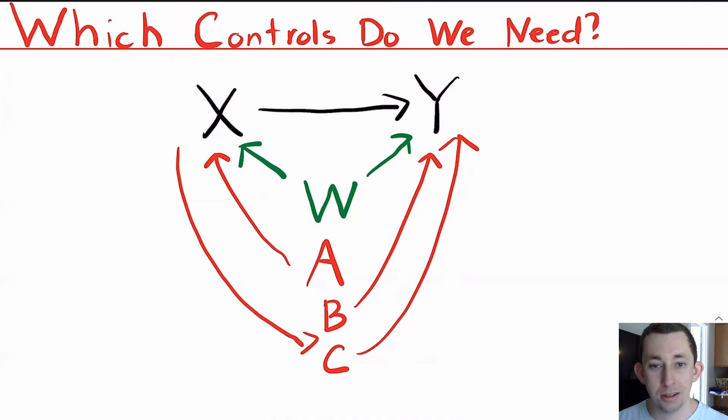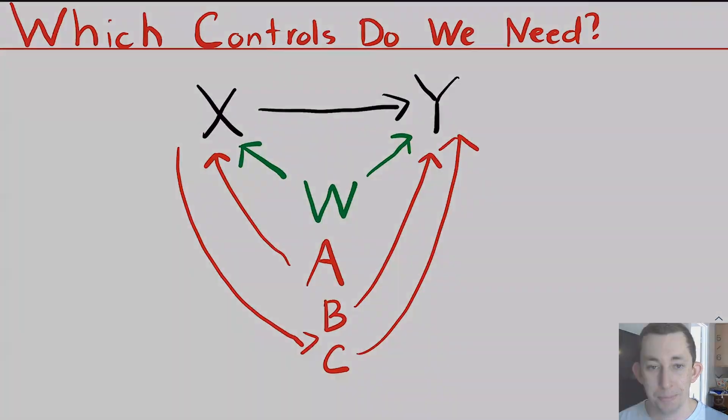I'll do a numerical example in a follow-up video. But hopefully, this gives you a bit more intuition for how we run a selection on observables, how we run an OLS regression and call it causality. If this was helpful, make sure to like and subscribe and we will see you next time for another case of econ struggles.